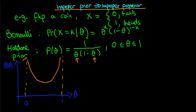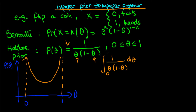Let's demonstrate that this prior proposed by Haldane is actually an improper prior. Before I do, note that I've said this prior equals 1/(θ(1−θ)) — there is no way to normalize this prior, as we will see, so I can say equals here, but I could equally say proportional to. To show it is not a valid probability distribution, I'm going to integrate 1/(θ(1−θ)) with respect to theta between zero and one.